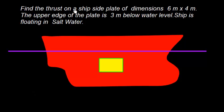Find the thrust on a ship side plate of dimensions 6 meter and 4 meter. 6 meter long and 4 meter wide. The upper edge of the plate is 3 meter below water level. Ship is floating in salt water.